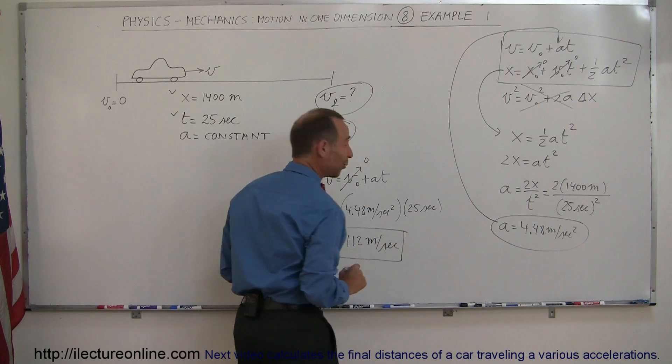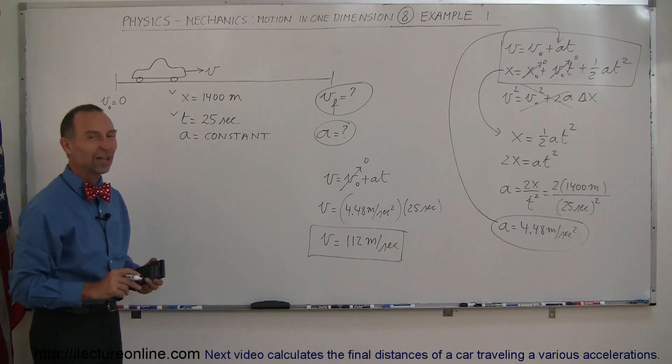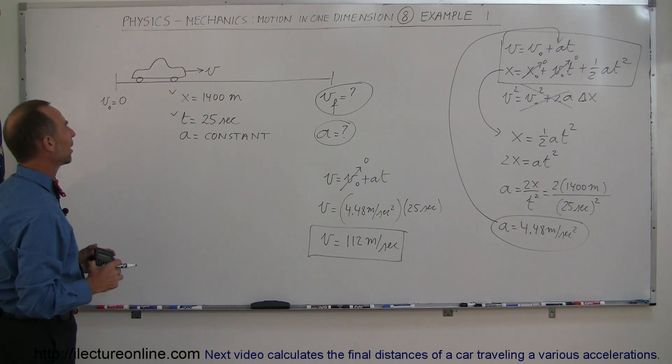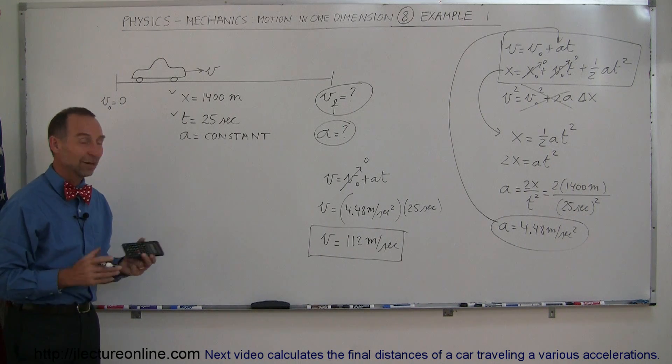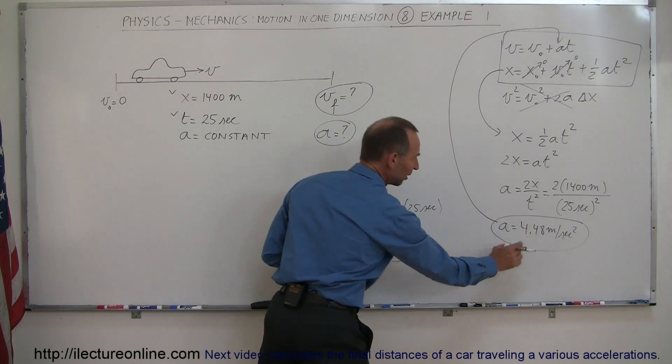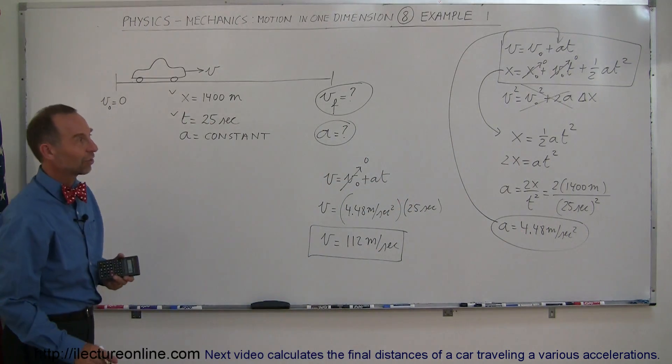Now that's really fast. So this is not your typical stock car that you buy in the local car dealer. It is probably a race car, but nevertheless, there are your answers. Final velocity: 112 meters per second. Acceleration: 4.48 meters per second squared.